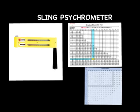After you sling this for a minute or so, you stop. The wet bulb temperature is then probably going to be lower than the dry bulb temperature. We take the difference in the wet bulb and dry bulb temperature and go over to a chart. With that chart, we can find the difference in wet and dry bulb, and then look at the dry bulb temperature, and from that we can determine the relative humidity.